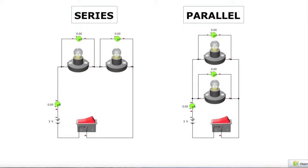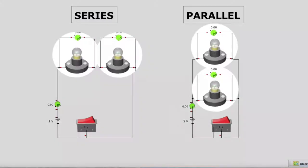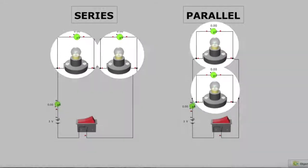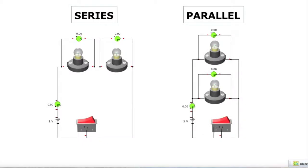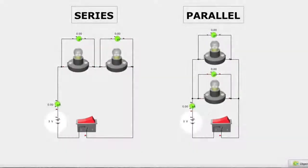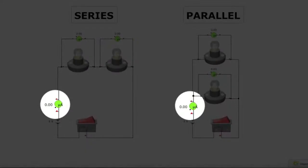On the screen you can see two circuits. Each one has two bulbs with voltmeters attached to measure the voltage drop across each bulb. Each circuit has a single switch to control the current, a 3 volt battery, and an ammeter that measures the amount of current for the entire circuit.